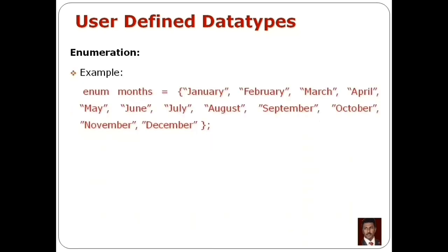For example, we have a variable for months. First, we use the 'enum' keyword, then the variable name 'months'. We use the assignment operator and open the left curly braces. Then we add the set of values. We have the months from January to December. In January, it is a string — a sequence of characters — so it is a string constant. That means we use double quotes around January.